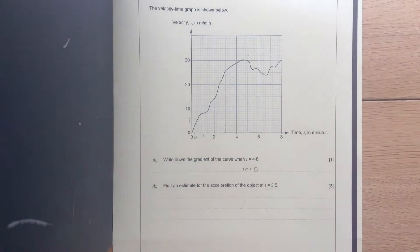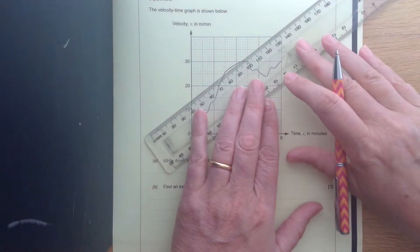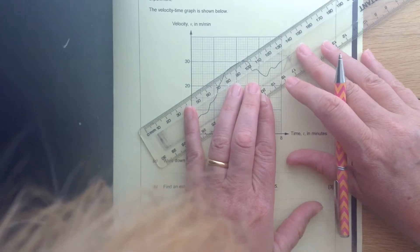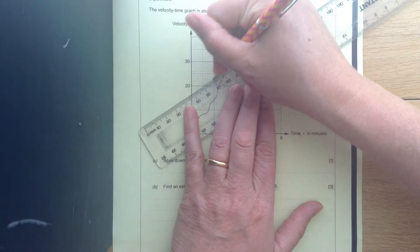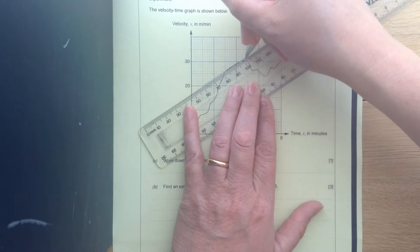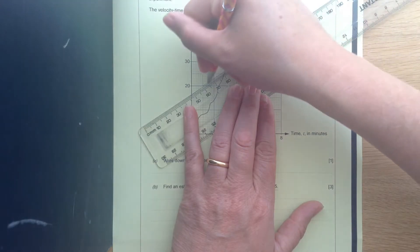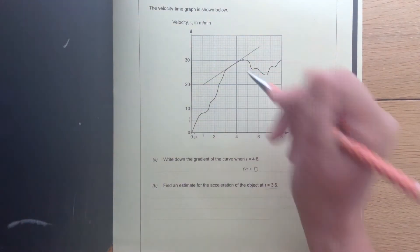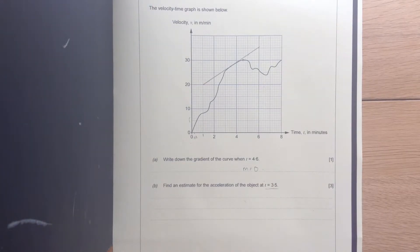To find the gradient, first of all, we're going to draw a straight line on. As accurately as we can. Okay, gradient. Drawing the tangent on then. So here's my tangent. Touching this point and going in the same direction.